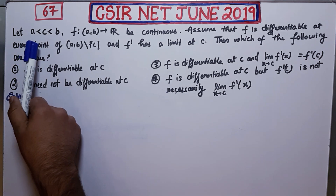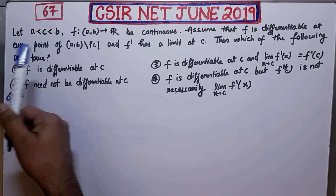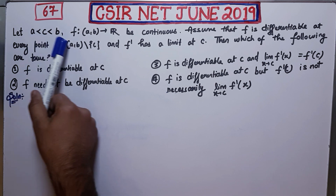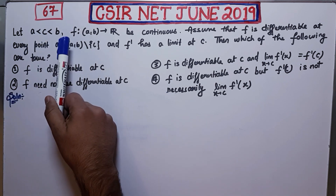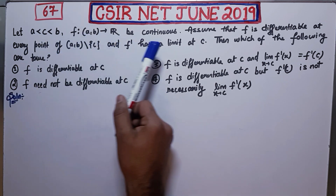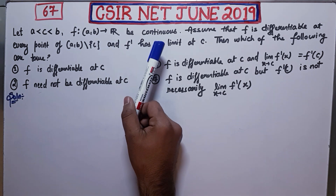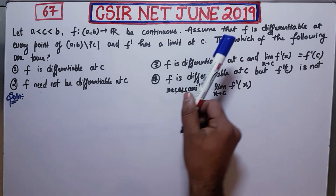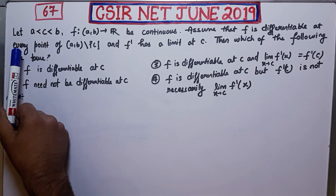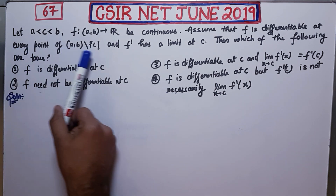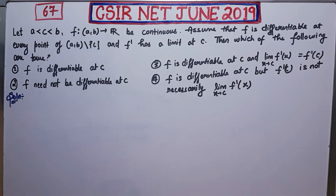Let A, B be an interval and C is a point between them. F is a function from [A, B] to R and it is continuous. Now assume that F is differentiable at every point of this interval minus the point C. And F dash has a limit at C. Then which of the following are true?